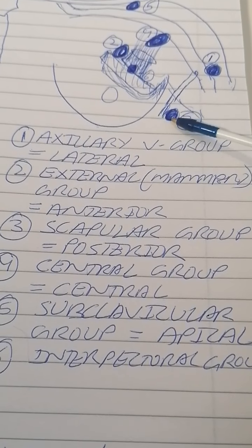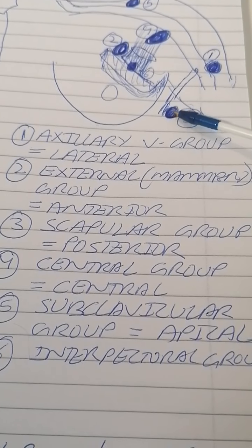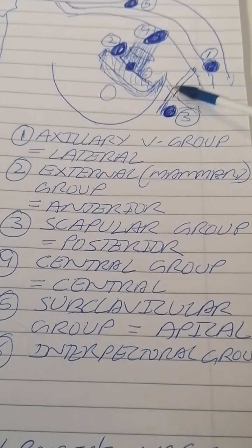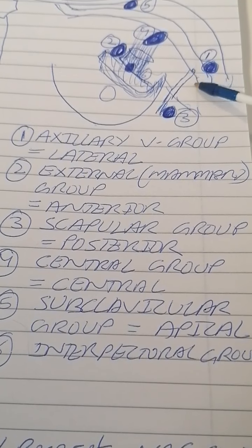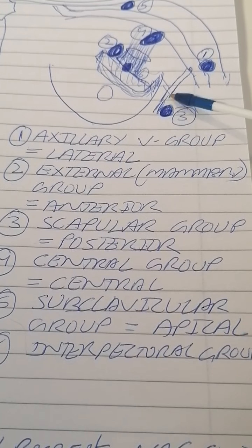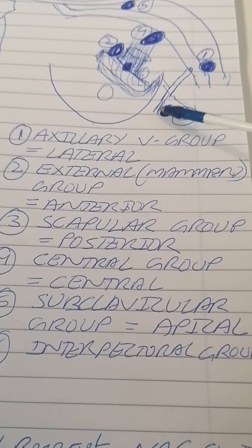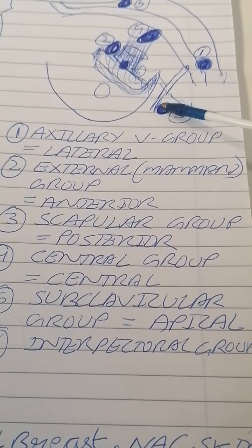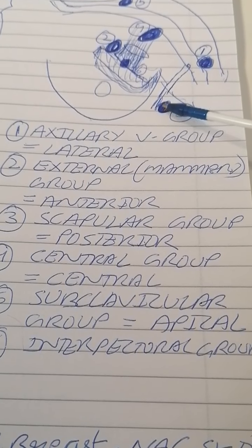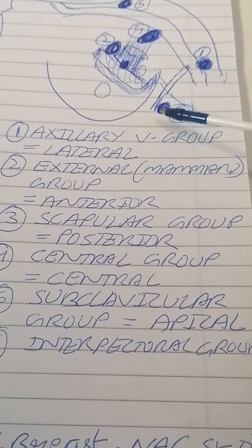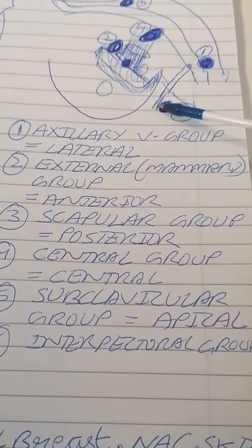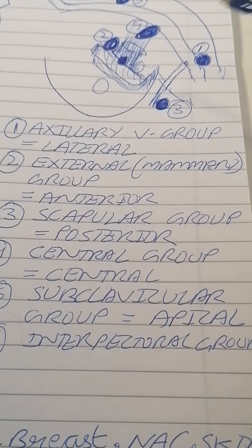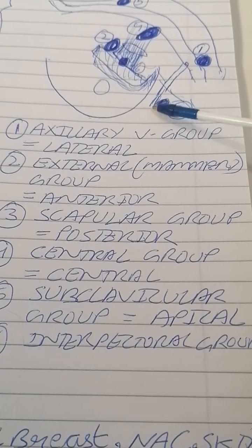The third group is the scapular group, also known as the posterior group. It is called the scapular group because it is contiguous with the subscapular vessels, which come out of the axillary vein. Its location is near the scapula and near the subscapular vein. This group receives drainage from the posterior trunk and posterior aspect.